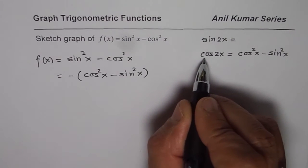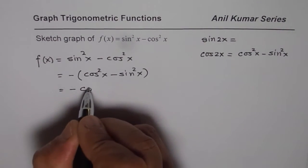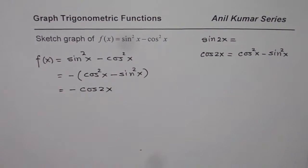minus sin²x is cos(2x). So I can write this as -cos(2x). Well, now I can sketch it, right?